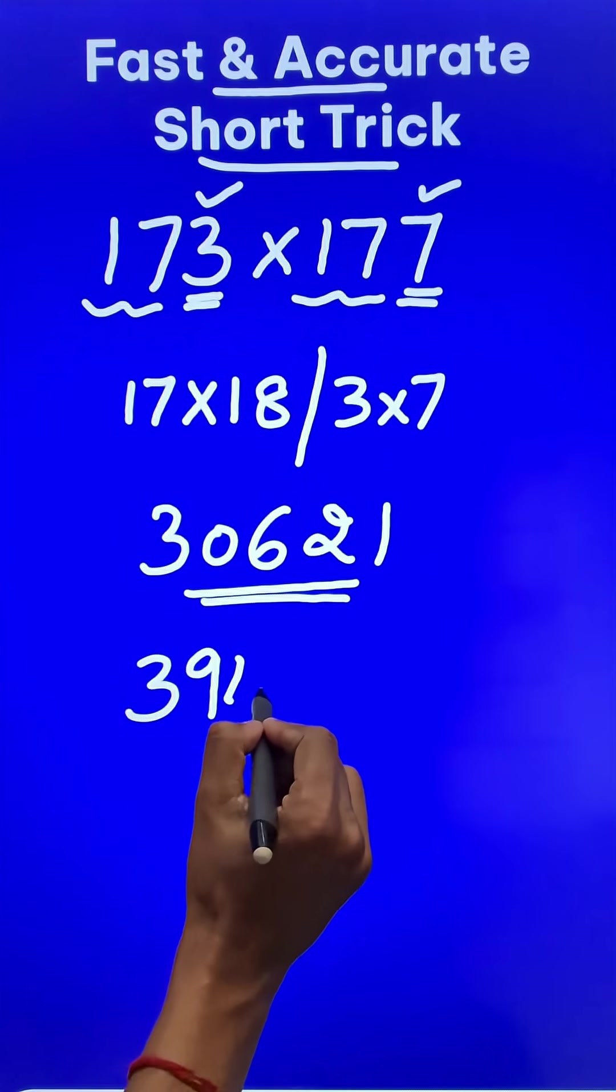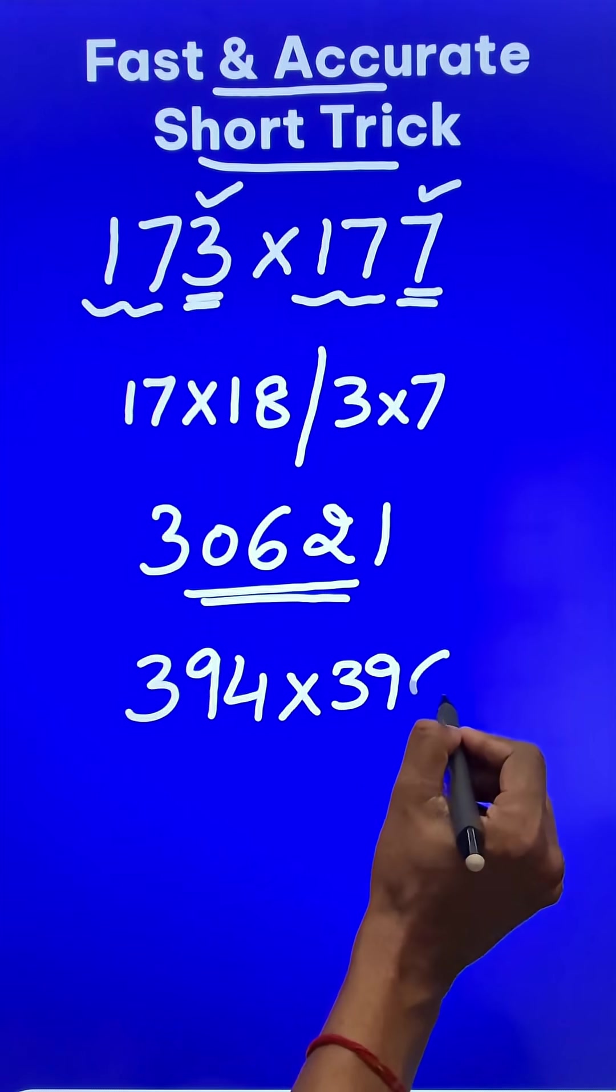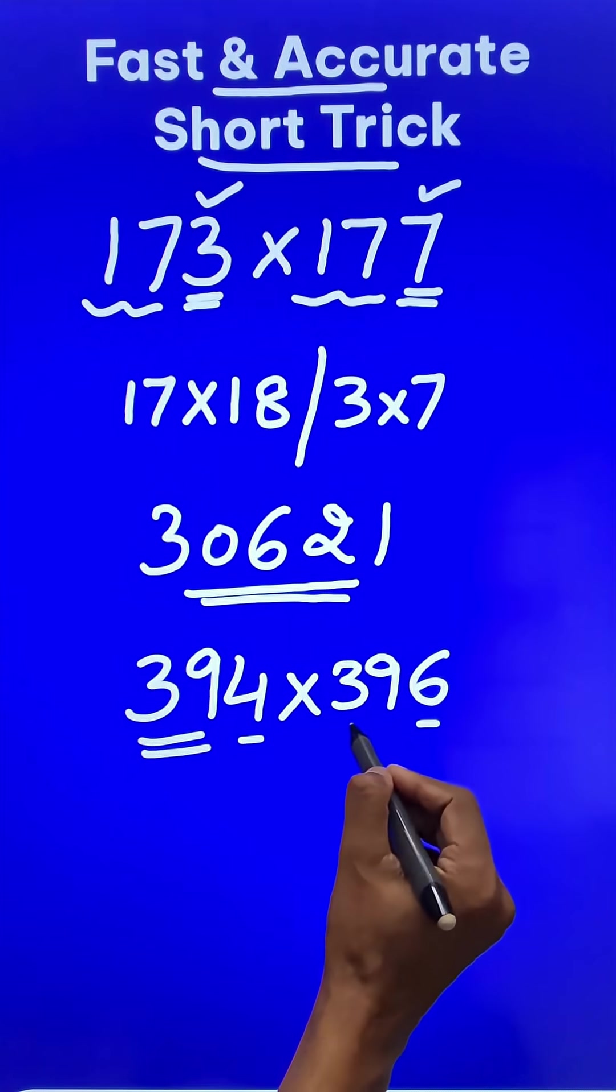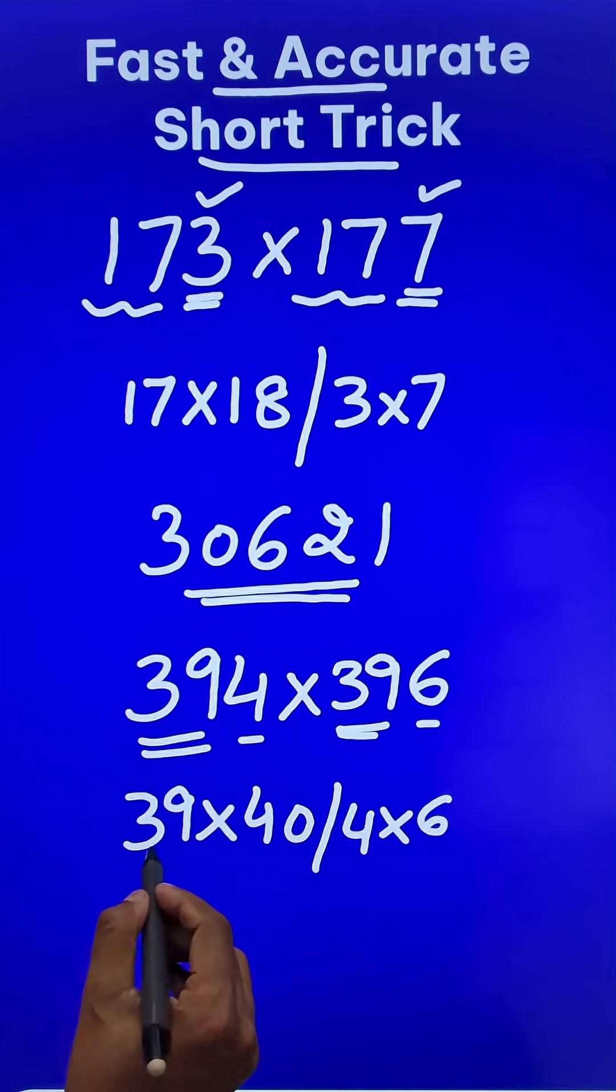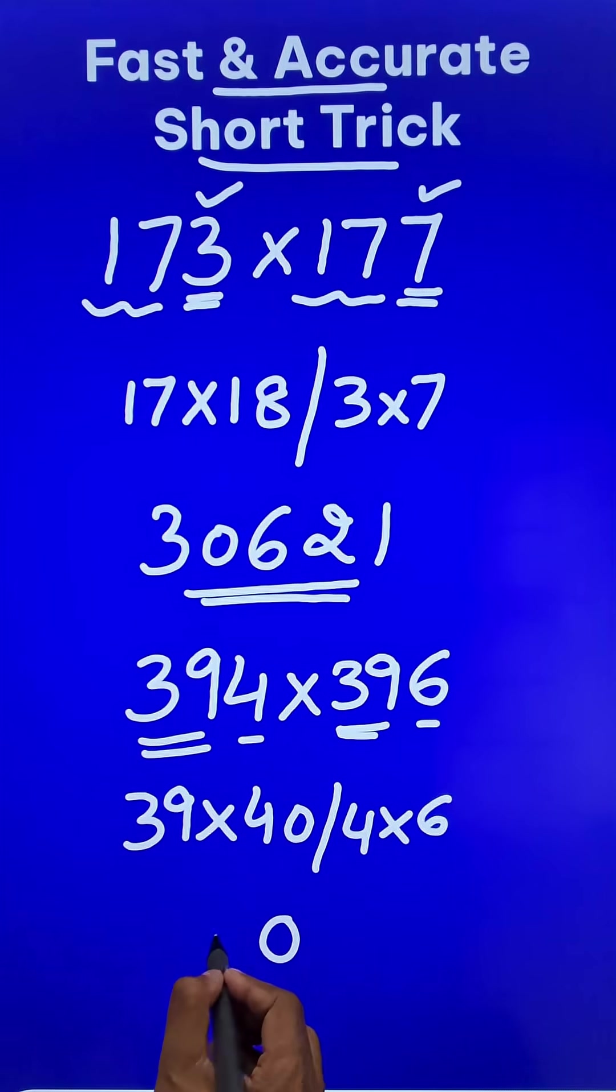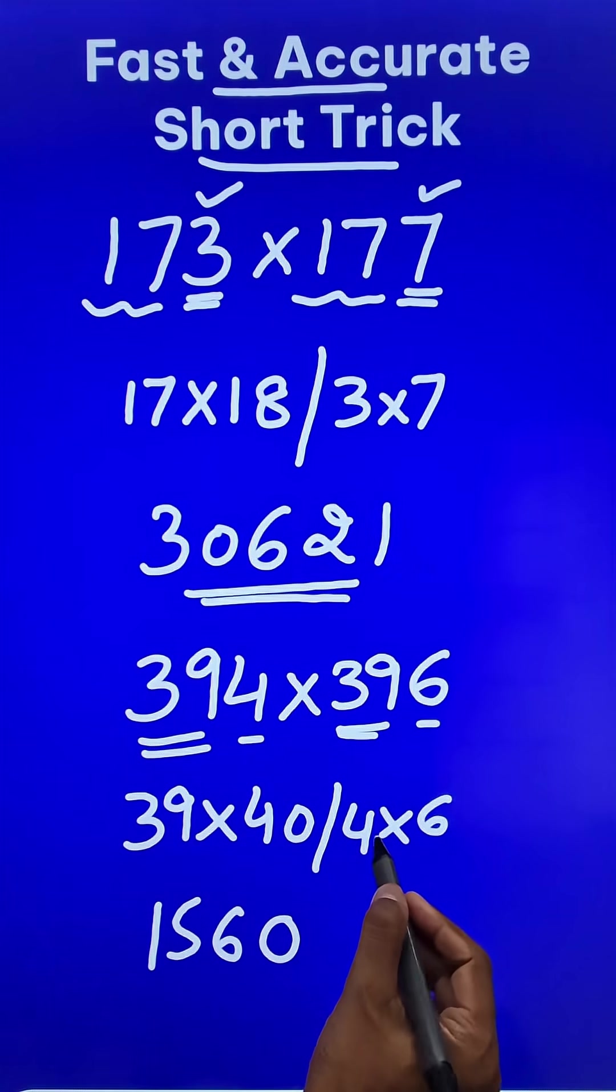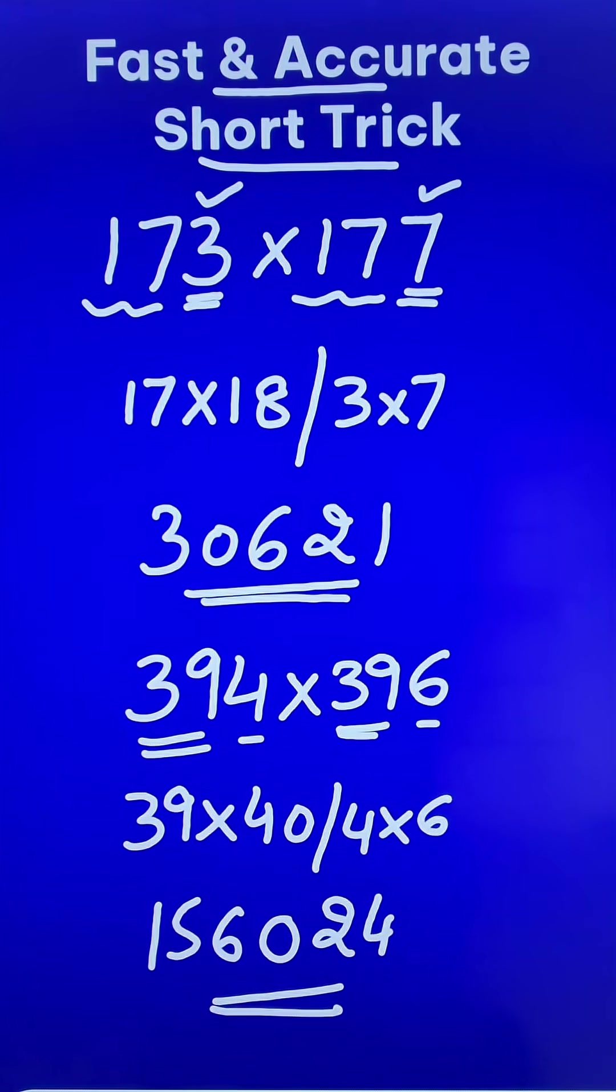Let us write one more: 394 and 396. So 4 plus 6 is 10, and the remaining number is 39. So 39 times 40, and then 4 times 6. Now 39 times 40 is 1560, and 4 times 6 is 24, giving 156024. Now pick up the calculator and check your answer.